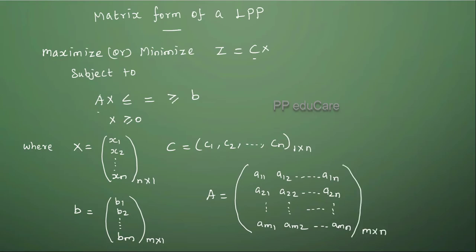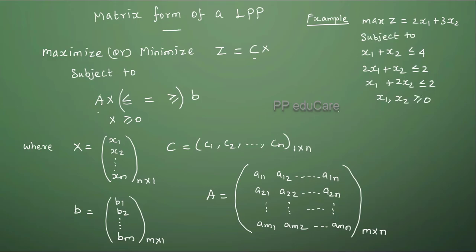It is an m by n matrix. This is the matrix form of a linear programming problem. Let's see an example. Suppose we have a linear programming problem as maximize Z equal to 2X1 plus 3X2 subject to the constraints X1 plus X2 is less than or equal to 4, 2X1 plus X2 is less than or equal to 2, X1 plus 2X2 is less than or equal to 2 and X1, X2 are greater than or equal to zero.